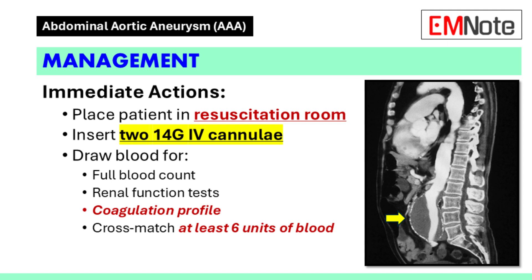Immediate actions include placing the patient in the resuscitation room, inserting at least two 14-gauge cannulae, and drawing blood for a full blood count, renal function tests, coagulation profile, and cross-matching at least six units of blood.